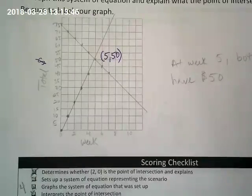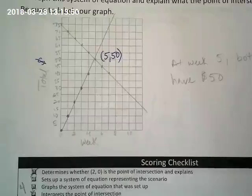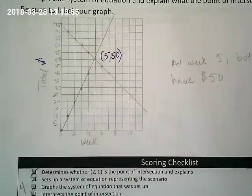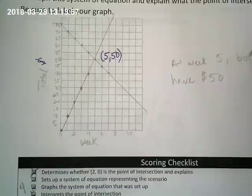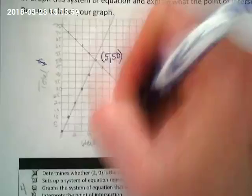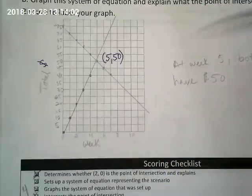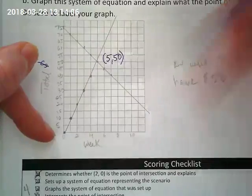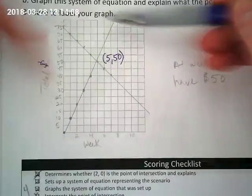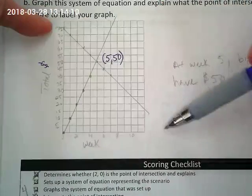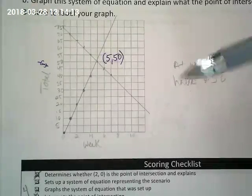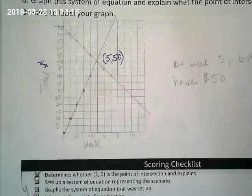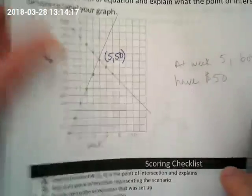Where do they meet? At five comma fifty. What does that mean in the context of the problem? After five weeks, they both have fifty dollars. Some of you divided the graph into quadrants — I didn't, because the first equation starts at zero and goes up, and the second started at 75 and went down. I knew we wouldn't need negatives, so I just graphed the first quadrant.